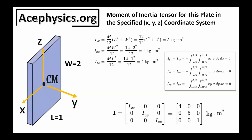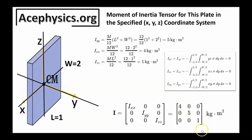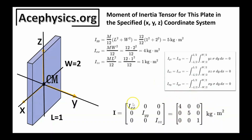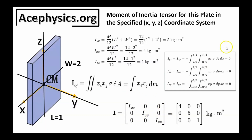We calculate the moment of inertia tensor for a rectangular plate that is 1 m long, 2 m wide, and 12 kg in mass, for the specified coordinate system. Note that the tensor components change if you use a different coordinate system. Because the mass is symmetrically distributed in this coordinate system, all off-diagonal terms are zero — there is no coupling between rotations about different axes, and the tensor takes a simple diagonal form. Ixx = 4, Iyy = 5, and Izz = 1. The off-diagonal terms are all zero, as verified by integration (e.g., Iyz = ∫yz dm = 0).